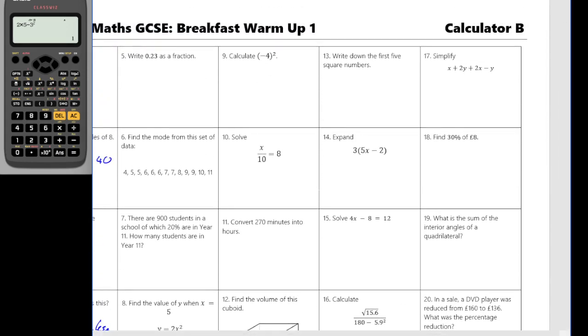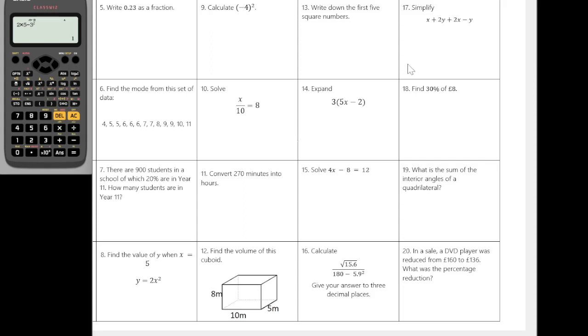Right, row two. Okay, question five. Write 0.23 as a fraction. So I'm going to use my calculator to do the work for this. So 0.23. And if I press equals, my calculator will automatically convert it to 23 out of 100.